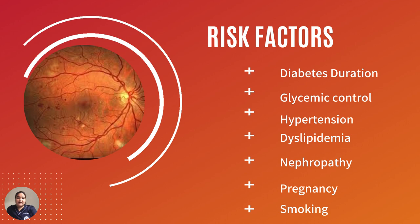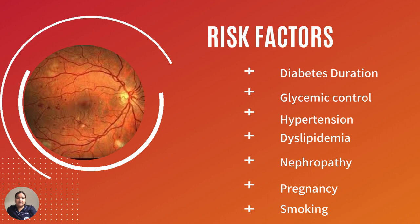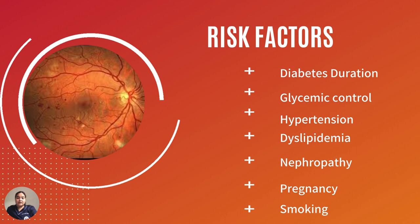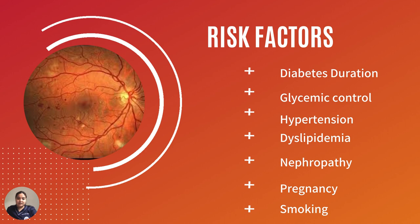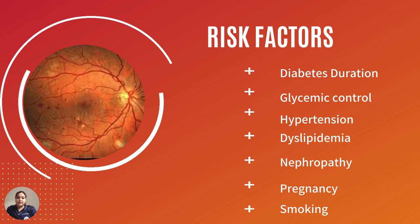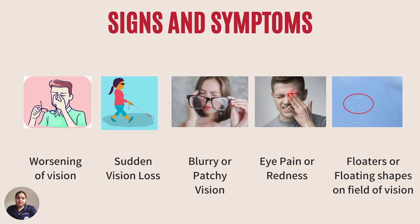Risk factors for developing diabetic retinopathy include diabetes duration, glycemic control, hypertension, dyslipidemia, nephropathy, pregnancy, and smoking. All of these increase the risk of developing diabetic retinopathy.